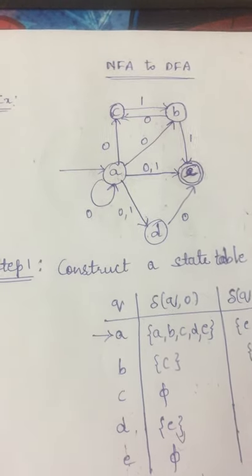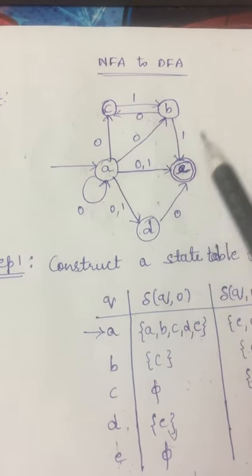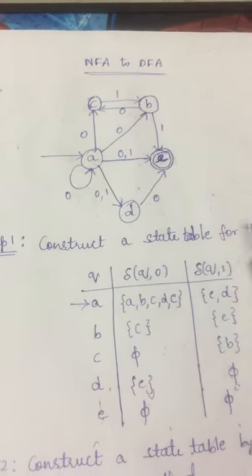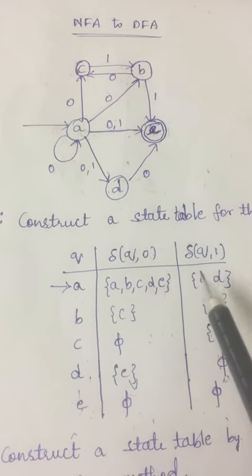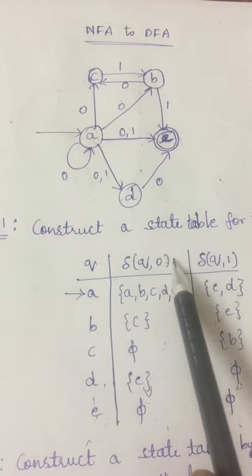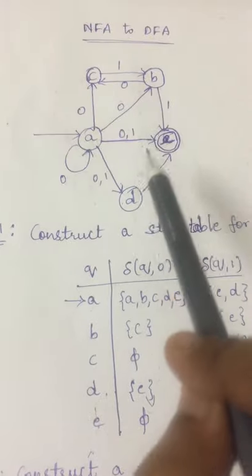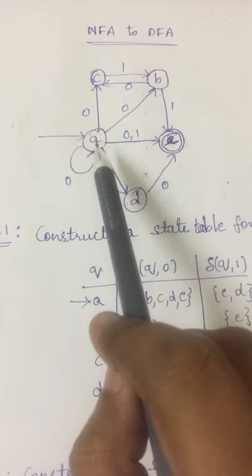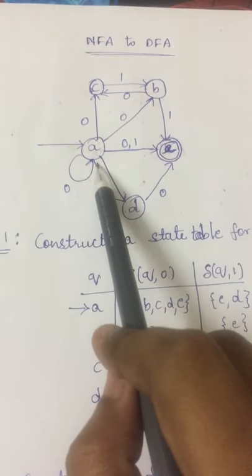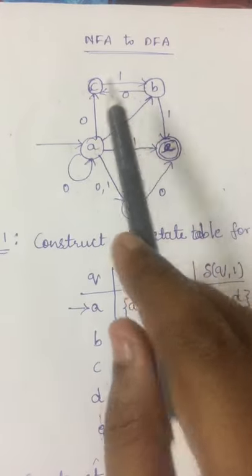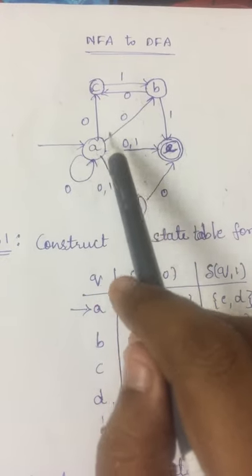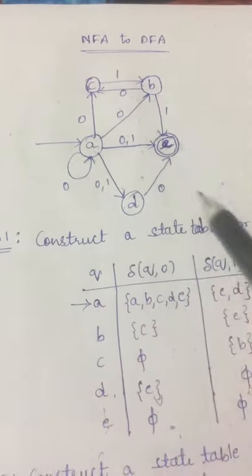Let us consider an example. This is an example of a NFA. For the given NFA, we have to construct a state table in step 1. Construction of state table is very easy as you all know. So let us start from the state A. For the state A, by reading the input symbol 0, we have to look into the diagram given in the question. A is remaining in the same state, moving to states B, C, D, E.